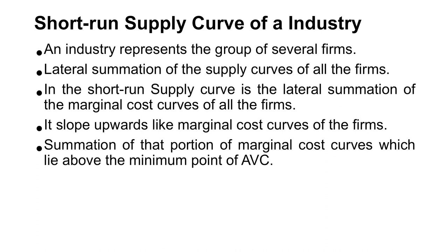The lateral summation means adding together all the marginal costs of firms, which is known as the supply curve of the industry. Its slope is upward, like the marginal cost curve of the firm. The supply curve of the industry in the short run is the summation of that portion of the marginal cost curve which is above the minimum point of average variable cost (AVC).